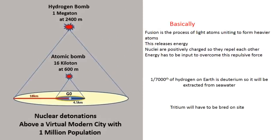Fusion is the process of light atoms uniting to form heavier atoms, releasing energy. Nuclei are positively charged, so they repel each other, and energy must be input to overcome this repulsive force. 1 in 7,000 hydrogen atoms on Earth is deuterium, so it will be extracted from seawater. Tritium will have to be bred on site.